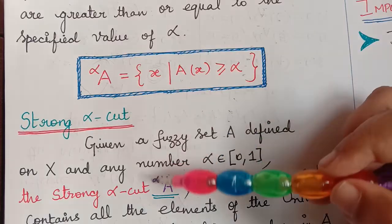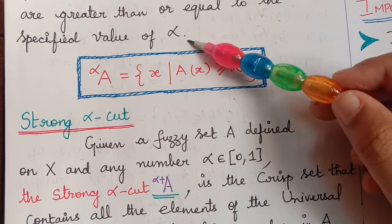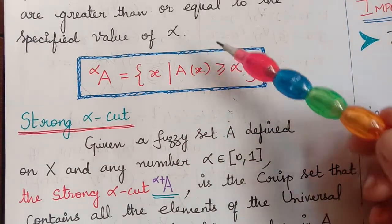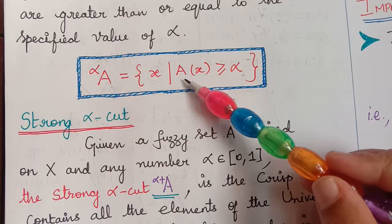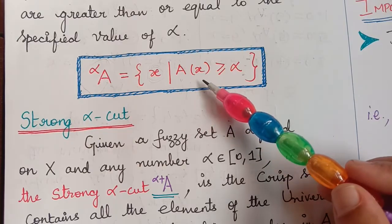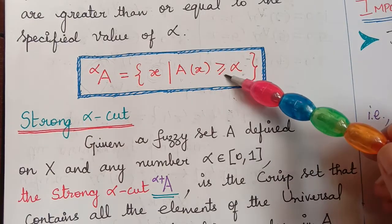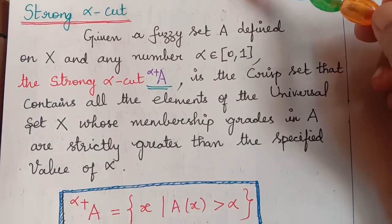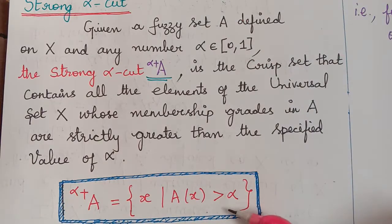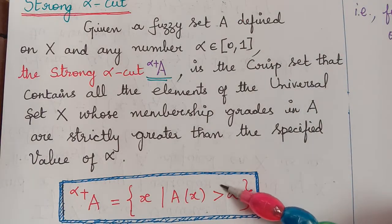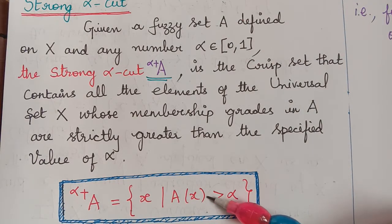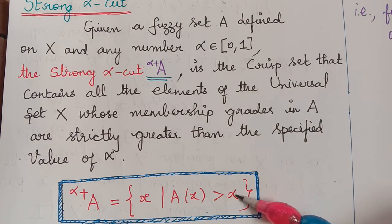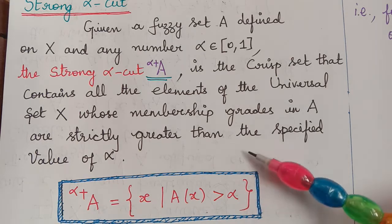The only difference between alpha cut and strong alpha cut is that in alpha cut, we include elements with membership grade greater than or equal to alpha, whereas for strong alpha cut we consider only those strictly greater than alpha. That is the only difference.